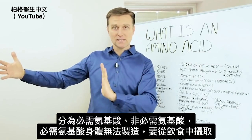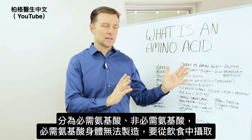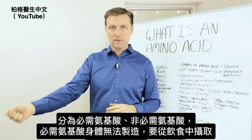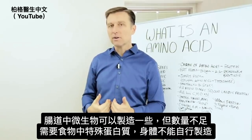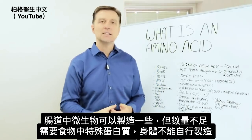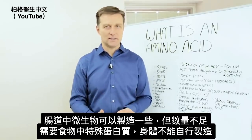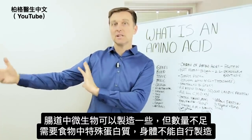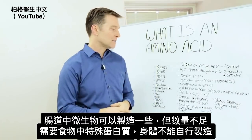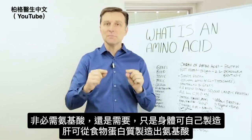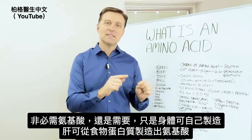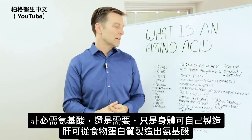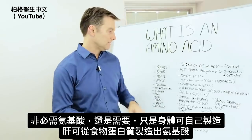You also have essential amino acids and non-essential amino acids. Essential basically means that you can't make these — they must be gotten from the diet. Your microbes in your gut have the capacity to make those, but not in sufficient quantities. Non-essential doesn't mean they're unimportant; it means your body can make them. Your liver has the capacity to make certain amino acids from other proteins that you eat.